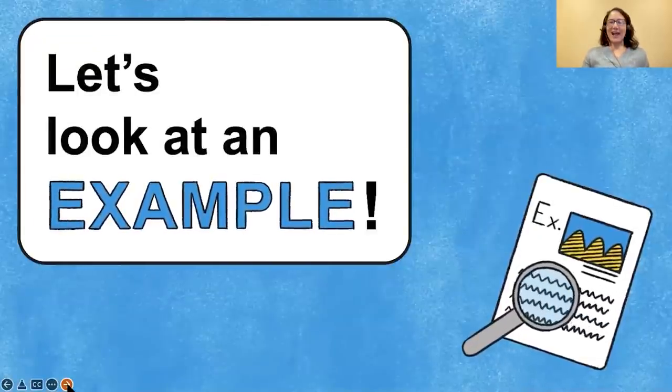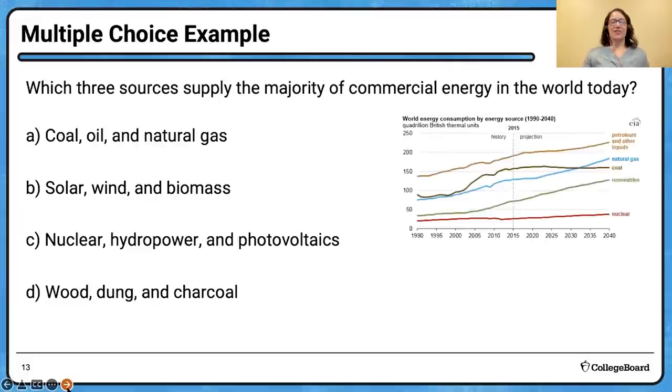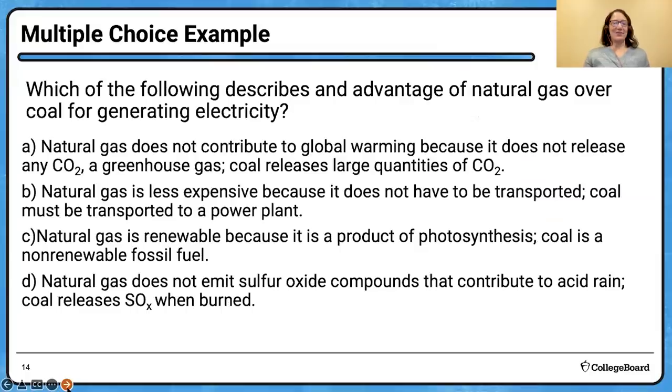Here's a multiple choice example. Stop and read the question and see if you can pick the right answer. Remember the graph that we just looked at. The three sources of energy that supply the majority of commercial energy in the world today are coal, oil, and natural gas. But we're seeing an uptick in the renewables.